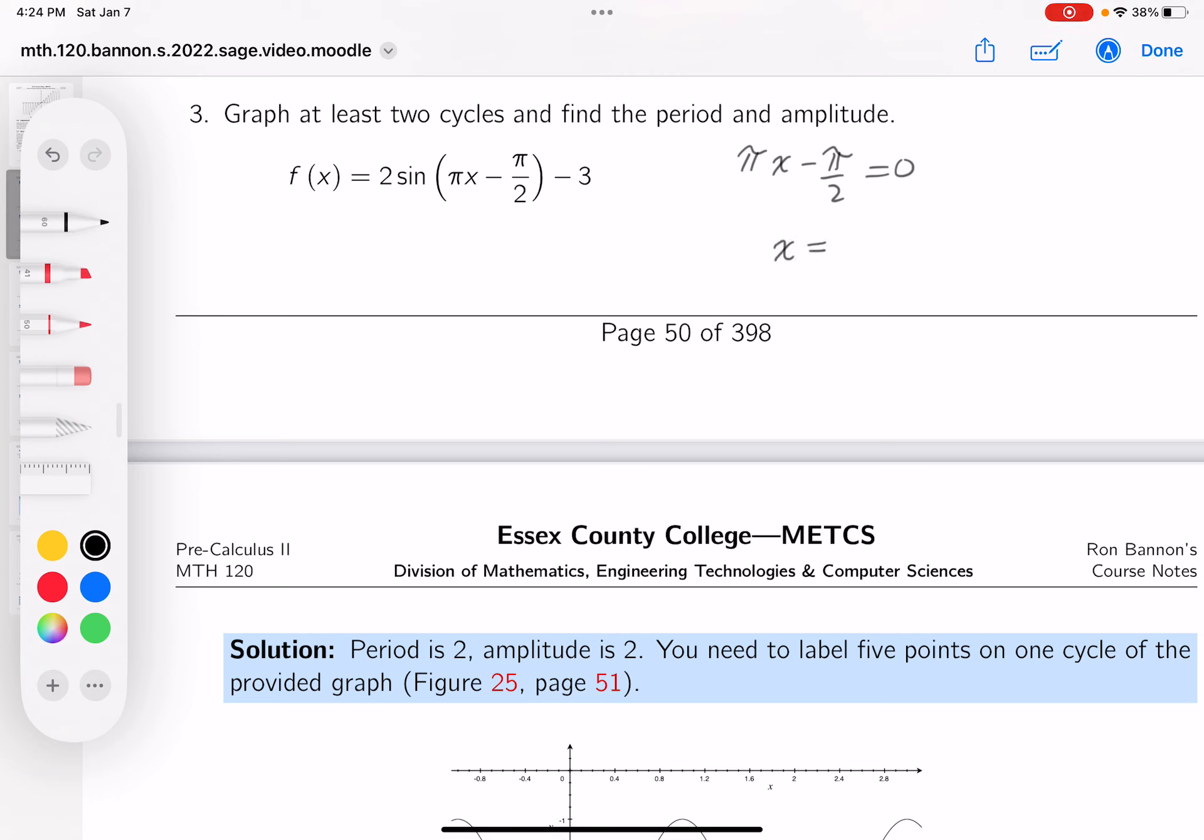So x would equal, well, it looks pretty simple, 1 half. All right, where does it end? Pi x minus pi over 2 equals 2 pi.